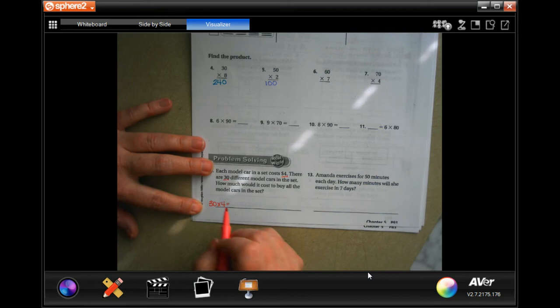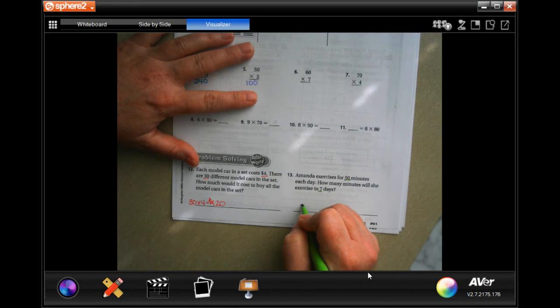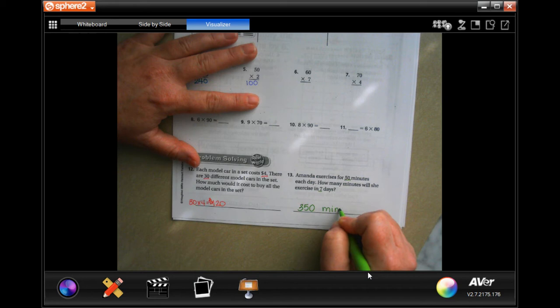Well, 30 times 4. Okay, so 4 times 3 is 12, and then attach that zero on. 120 dollars. Okay, Amanda exercises for 50 minutes each day. How many minutes will she exercise in seven days? Well, 7 times 5 is 35, and then we have to attach that zero on, and it's being measured in minutes.